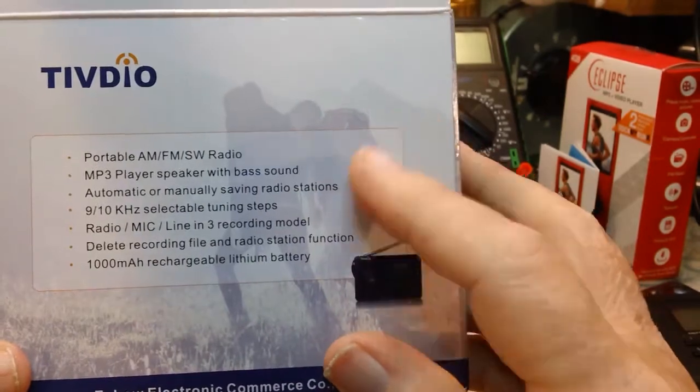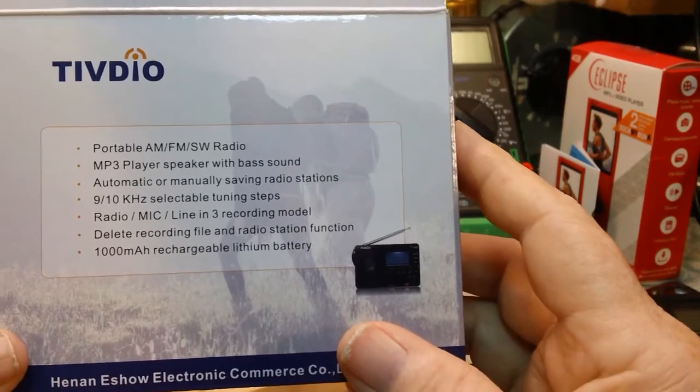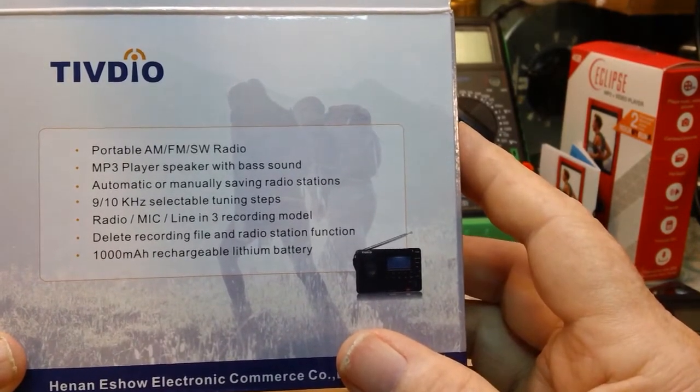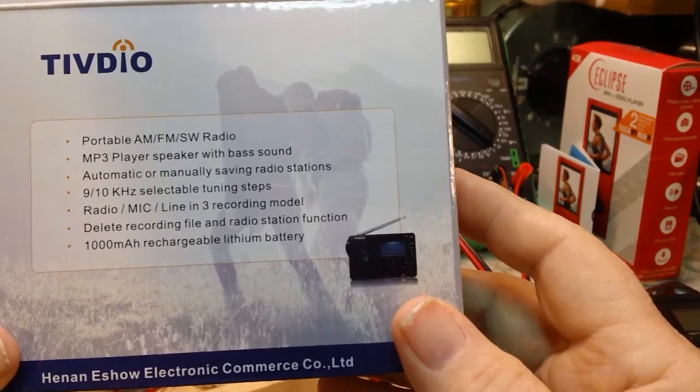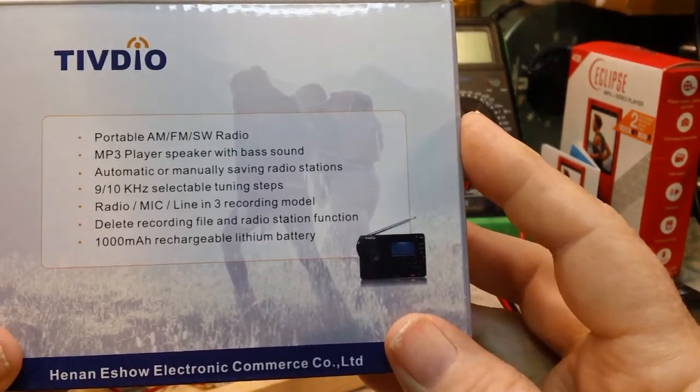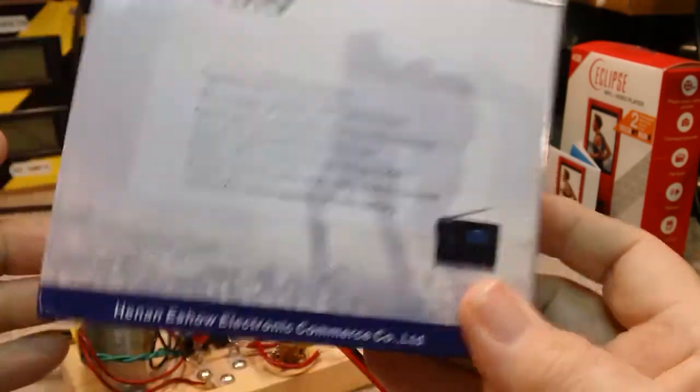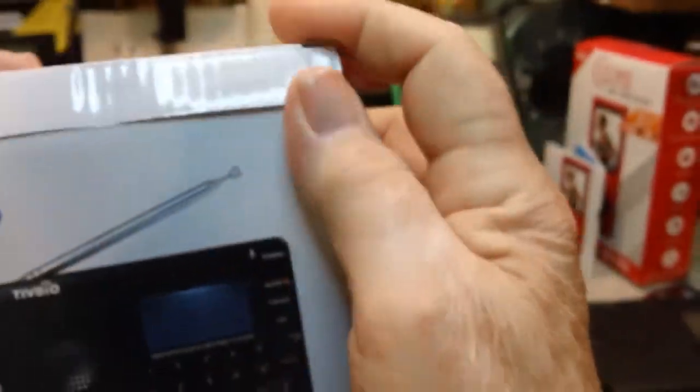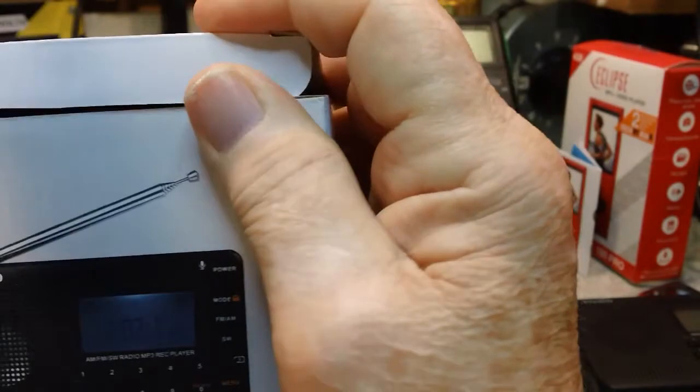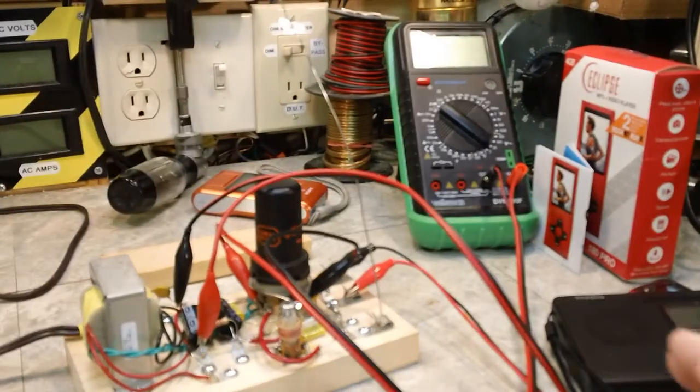Automatic or manually saving radio stations. I don't know about the automatic, but I know you can manually save them. Nine, ten kilohertz selectable tuning steps. That's for wherever you're at. Radio mic, line in, three recording mode. So yeah, you can do voice recordings with this. Delete recording file and radio station function. One thousand milliamp hour rechargeable lithium battery. So it does have the battery kind of like a cell phone that you put in there. But like I said, for less than $18, $17.70 something I think I paid for it, that is a bargain. I mean it is just really nice radio.